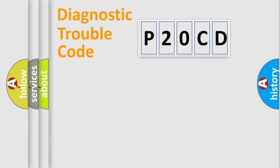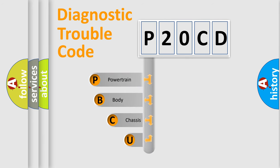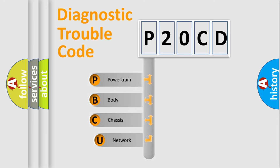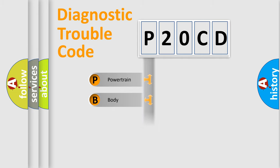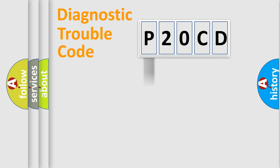Let's do this. First, let's look at the history of diagnostic fault code composition according to the OBD2 protocol, which is unified for all automakers since 2000. We divide the electric system of automobile into four basic units: Powertrain, Body, Chassis, and Network.